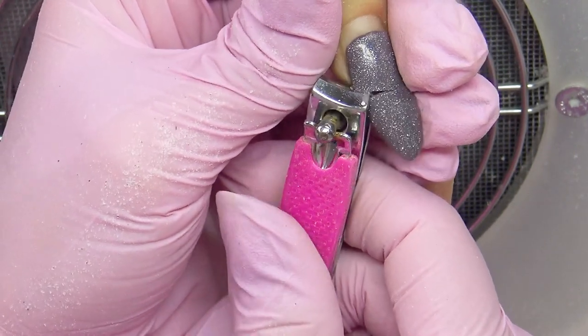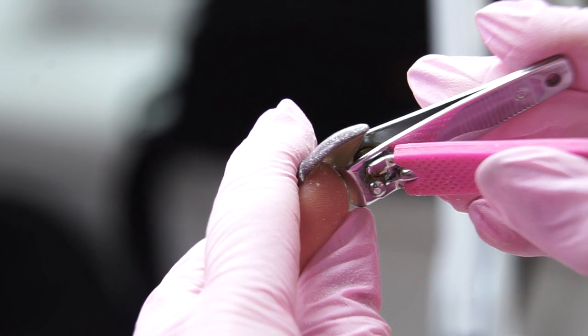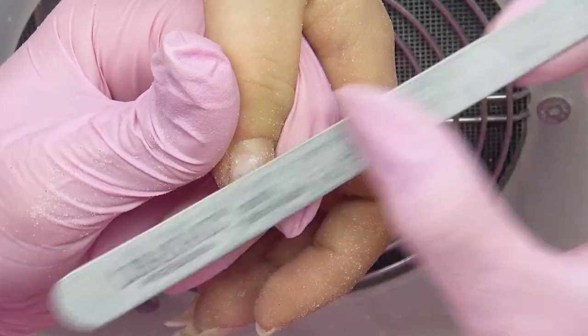We will remove the lens completely and extend the nail. With the help of a clipper, I'm removing the lens. We need to be extremely careful not to damage the hyponychium, the skin that continues the nail bed. We are filing off the remaining material.